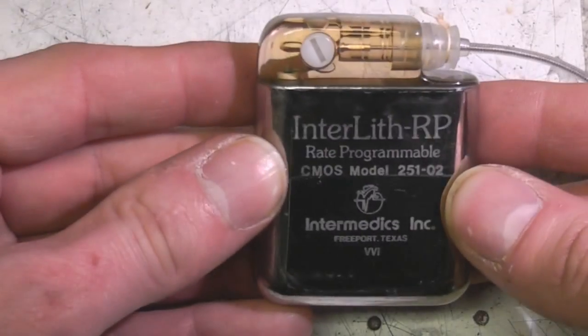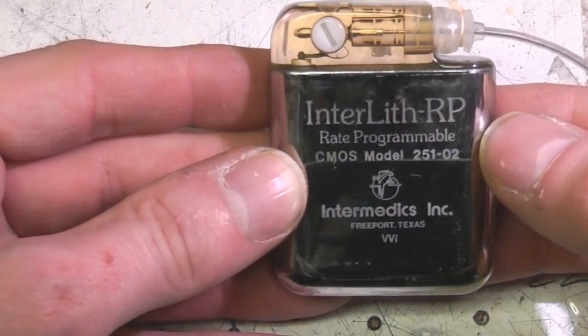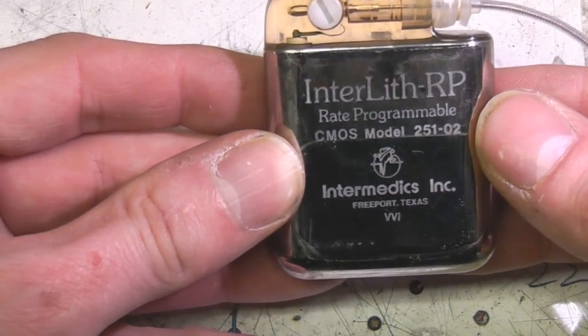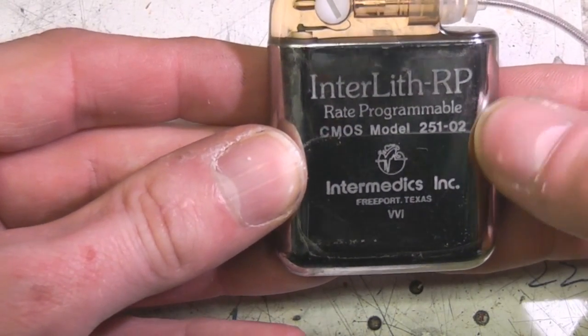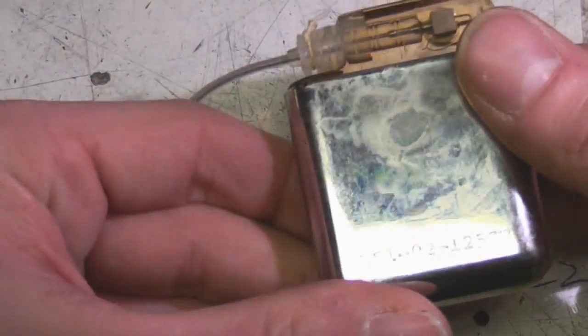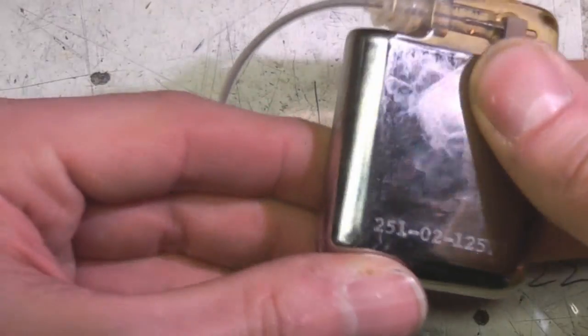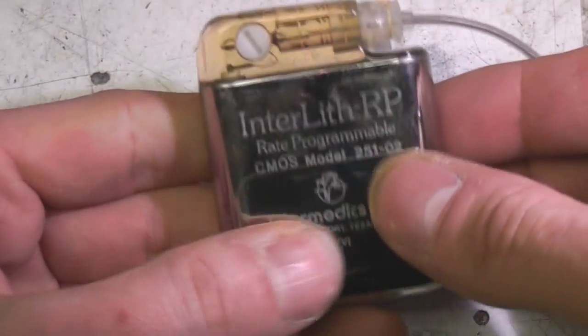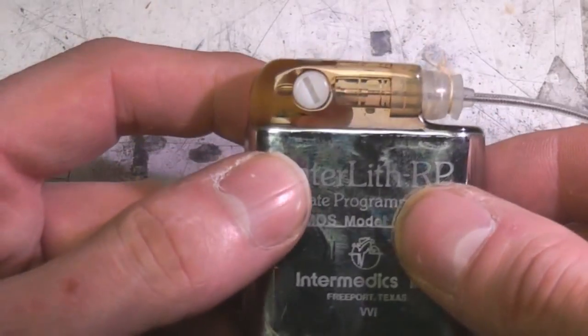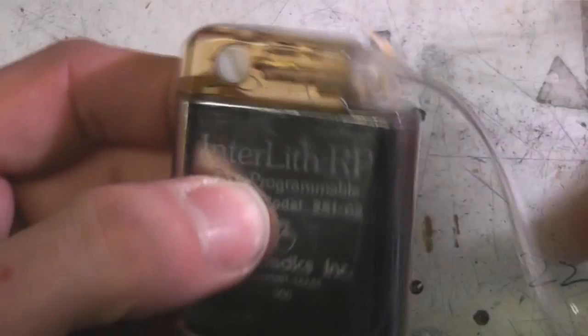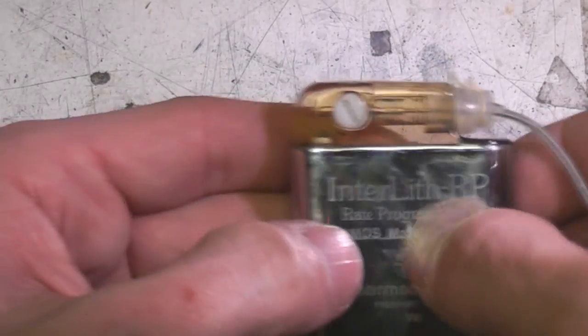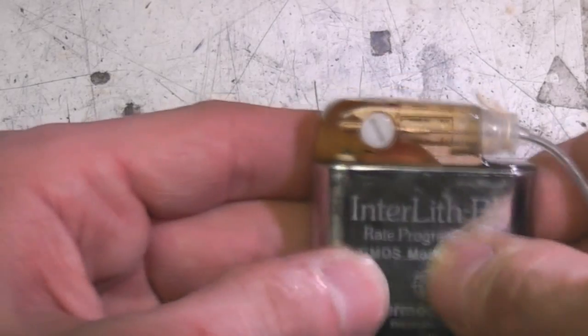Today we've got another implantable medical device courtesy of eBay. This is an Interlith RP rate programmable CMOS model 251. I think this is a fairly simple pacemaker rather than the defibrillator we saw last time. It's fairly clean, so either it hasn't been implanted or it's been thoroughly cleaned, or possibly it's a demonstration model. Although I thought if it was a demo unit it would have a big label saying this thing doesn't work, please don't implant it.